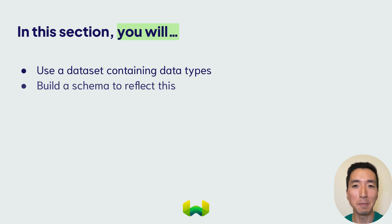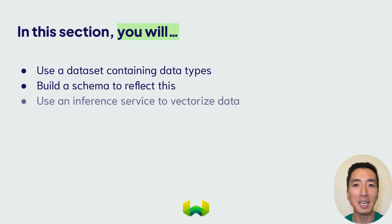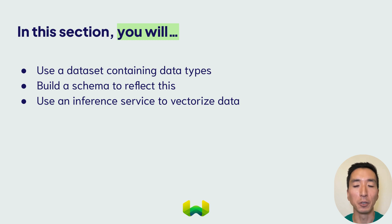First, we'll build a schema for our new data class, with properties and data types to correspond to the dataset. And then we'll use an inference service to obtain our object vectors, so that we can search through these questions according to their meaning.